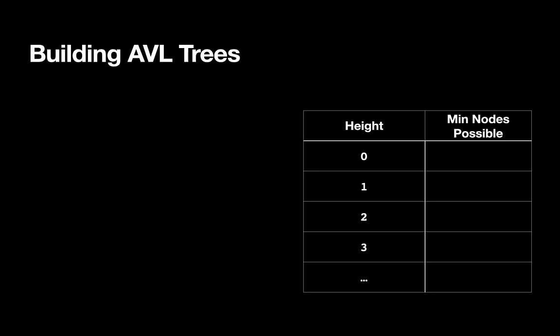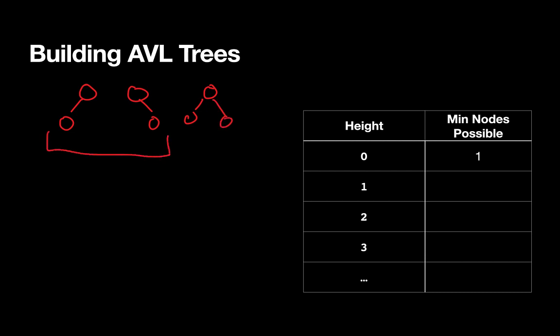So height of zero — I'm going to assume that that's a single node all by itself, so the minimum possible nodes would be one. When we get to a height of one, we've got a couple of different options. Those are all valid AVL trees, and these two have the minimum number of nodes possible at two nodes.